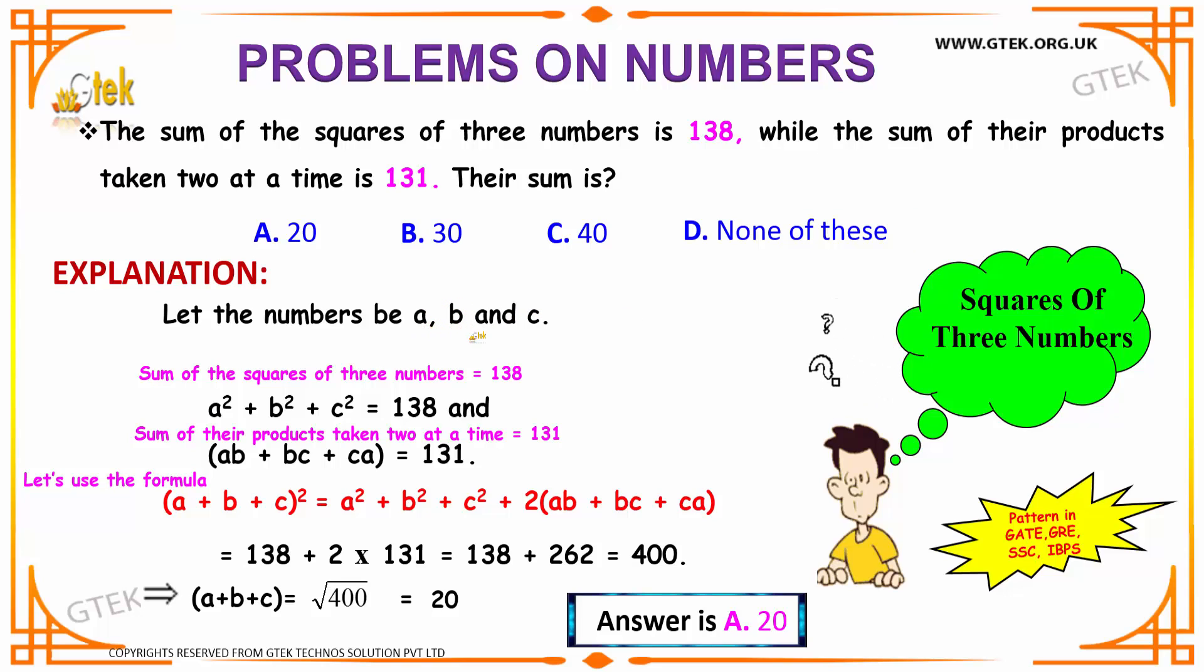Let the numbers be A, B, and C as we assume. So the sum of the squares of the three numbers is given to be 138. So the square of each number summed, that is A square, B square, and C square. Summation is A square plus B square plus C square to be 138. And the sum of their products taken two at a time is nothing but A into B plus B into C plus C into A to be 131.